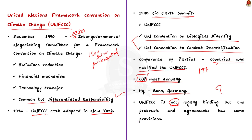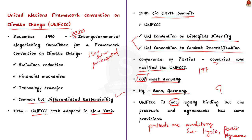UNFCCC is itself not legally binding. It does not set mandatory limits on greenhouse gas emissions for individual countries and contains no enforcement mechanisms. However, protocols resulting from UNFCCC Conference of Parties — like the Kyoto Protocol and the Paris Agreement — set emission targets with binding enforcement mechanisms, making them legally binding.